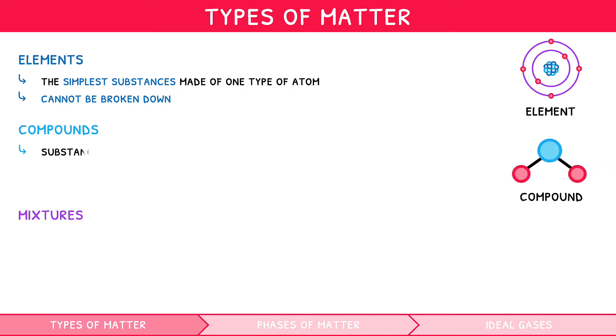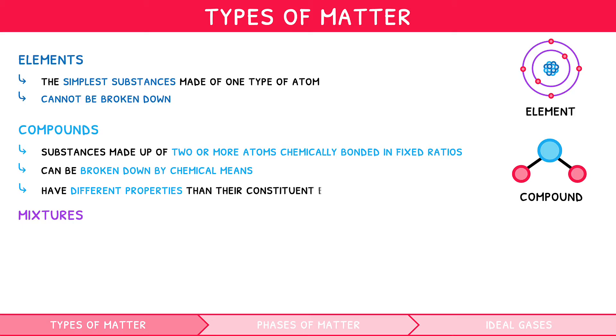Compounds, however, include matter made up of two or more different atoms chemically bonded together in fixed ratios. As a result, they can be broken down into their constituent elements by chemical means. Compounds have different properties from those of their constituent elements.